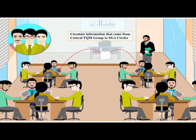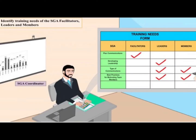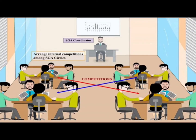The SGA coordinator also approves Kaizen done by SGA circles. They appraise top management of the department on SGA status. They circulate information that comes from the central TQM group to SGA circles. They arrange Kaizen presentations to top management of the department. They identify training needs of SGA facilitators, leaders and members, and arrange internal competitions among SGA circles.